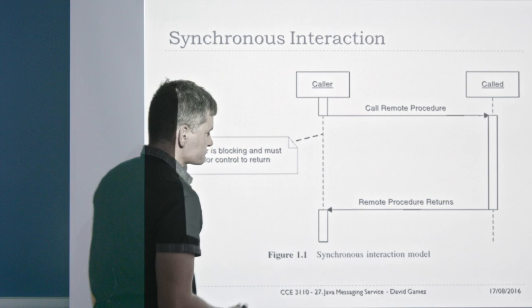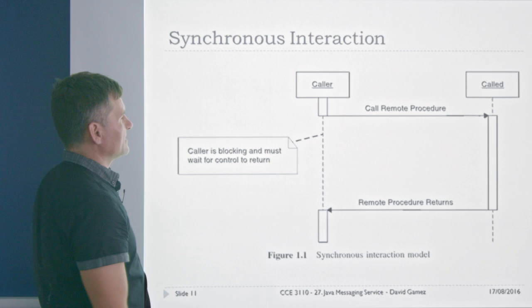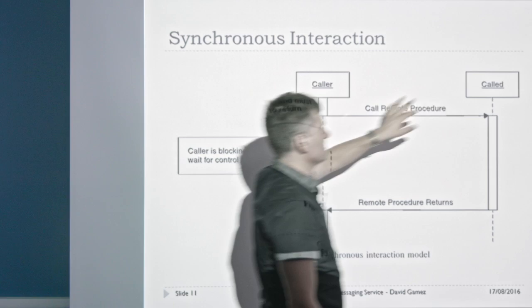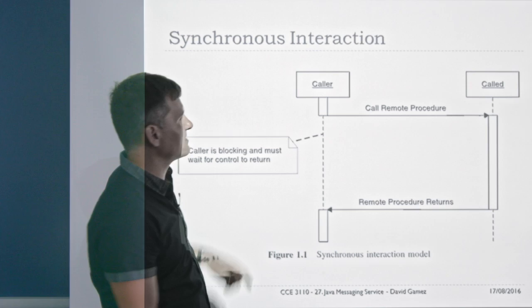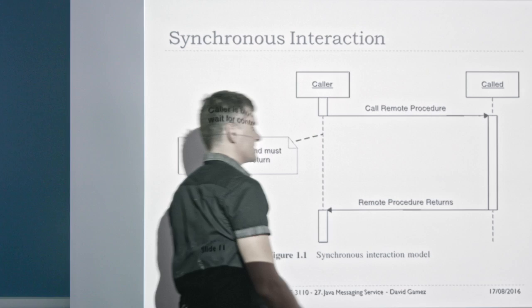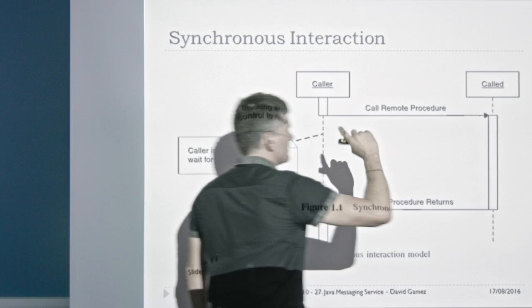You can see that in this model, although we've distributed the program between two computers, we haven't actually gained any more CPU time. We only have the CPU time of effectively one computer because the caller is just sitting there doing nothing while the remote procedure is executing. There might be other reasons to run a procedure on a remote computer, but we're not really gaining anything in terms of distributed computational performance.